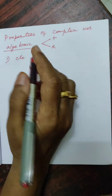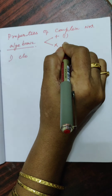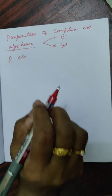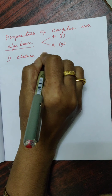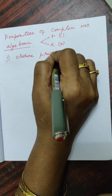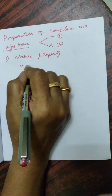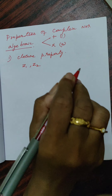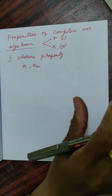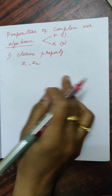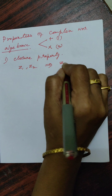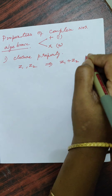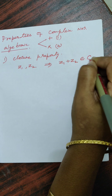First, algebraic properties on addition. The first property is Closure property. Take any two complex numbers Z1 and Z2 — their addition Z1 plus Z2 also belongs to the complex numbers.